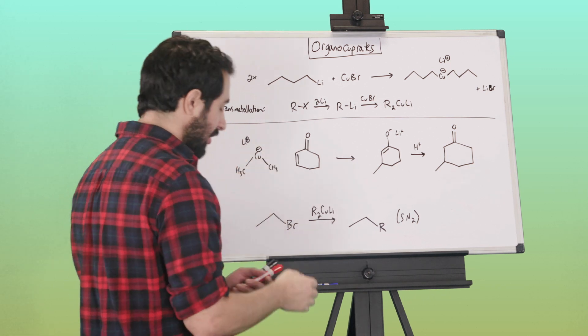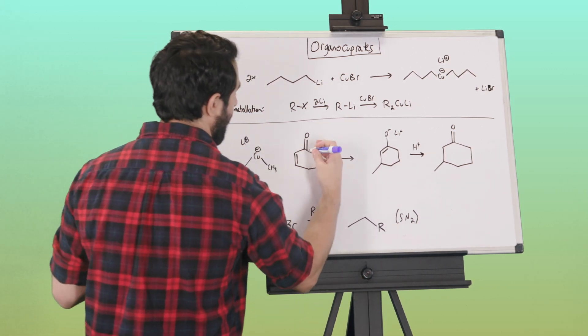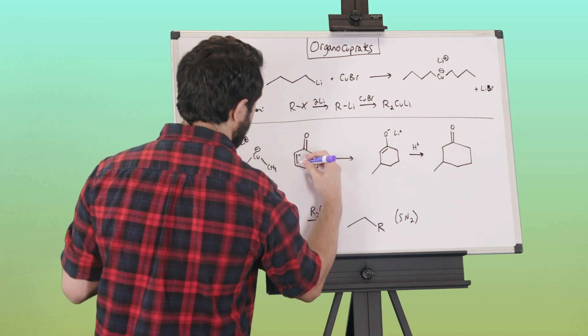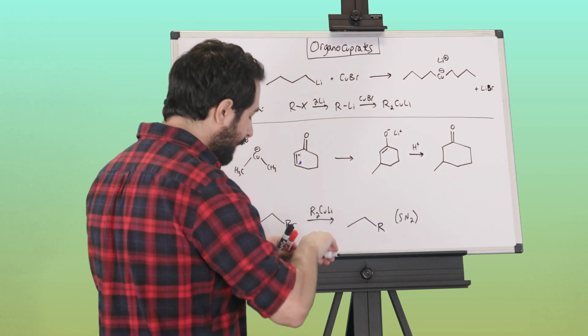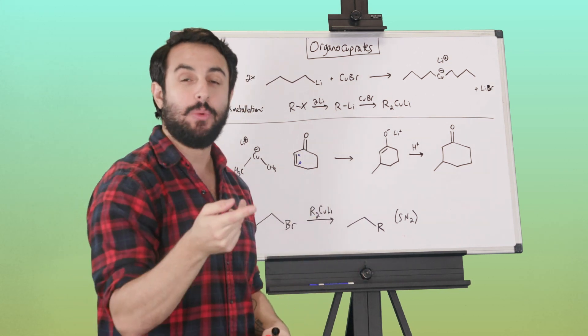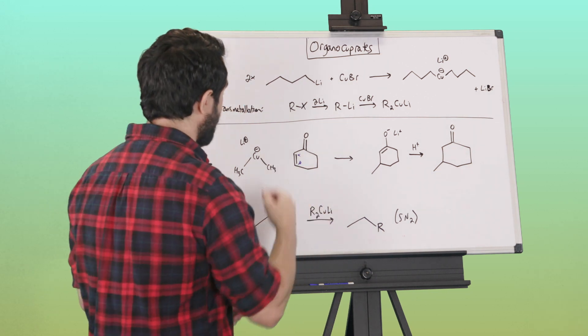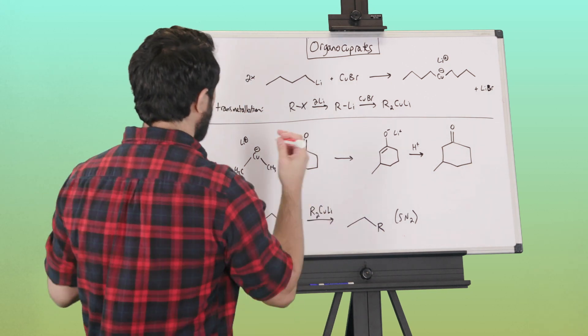What they're going to do is they're actually going to attack the beta position when we have an alpha-beta unsaturated ketone. So here's alpha, here's beta. This is very similar to when we learned Michael addition—we saw that an enolate would attack the beta position of an alpha-beta unsaturated ketone.